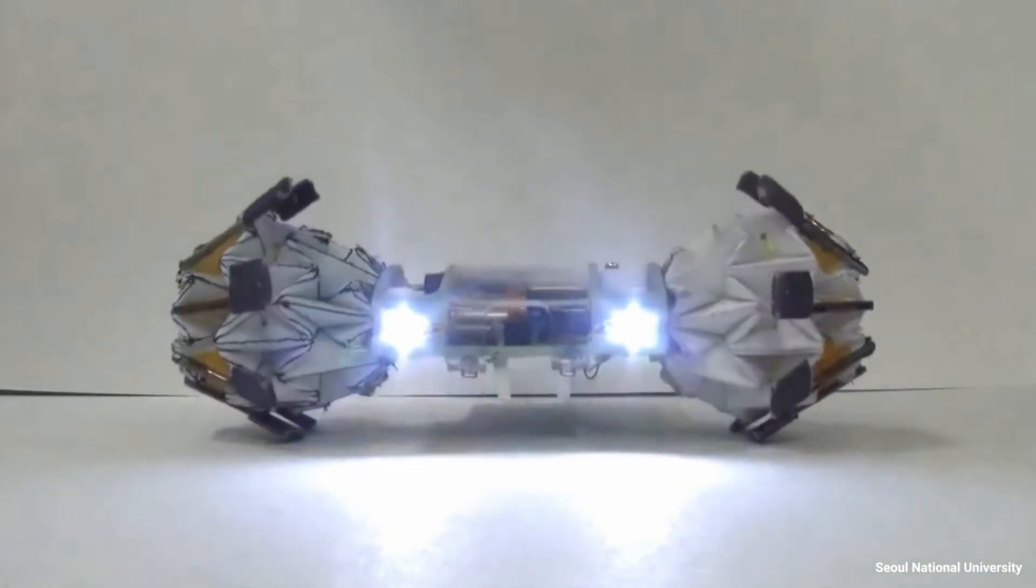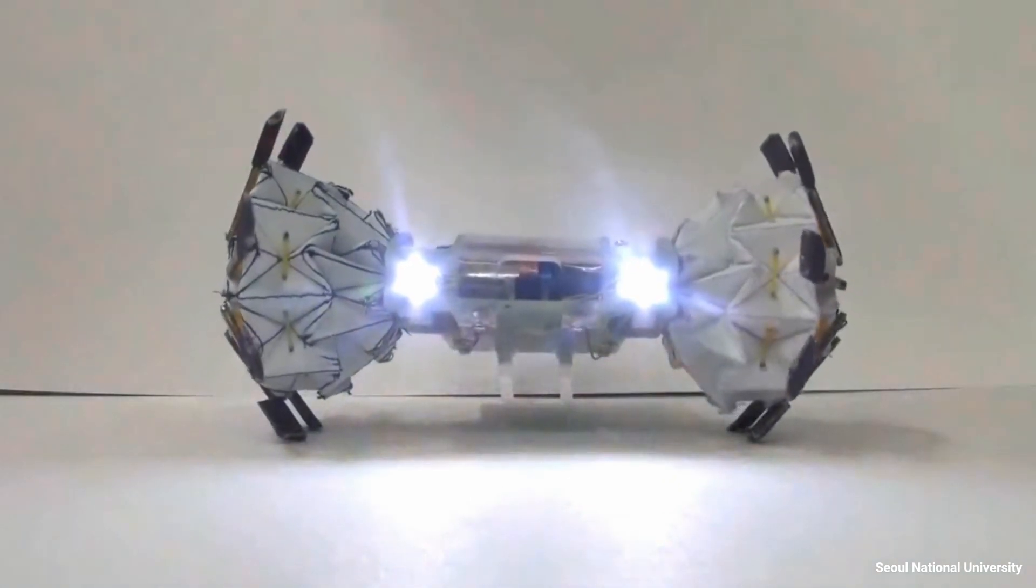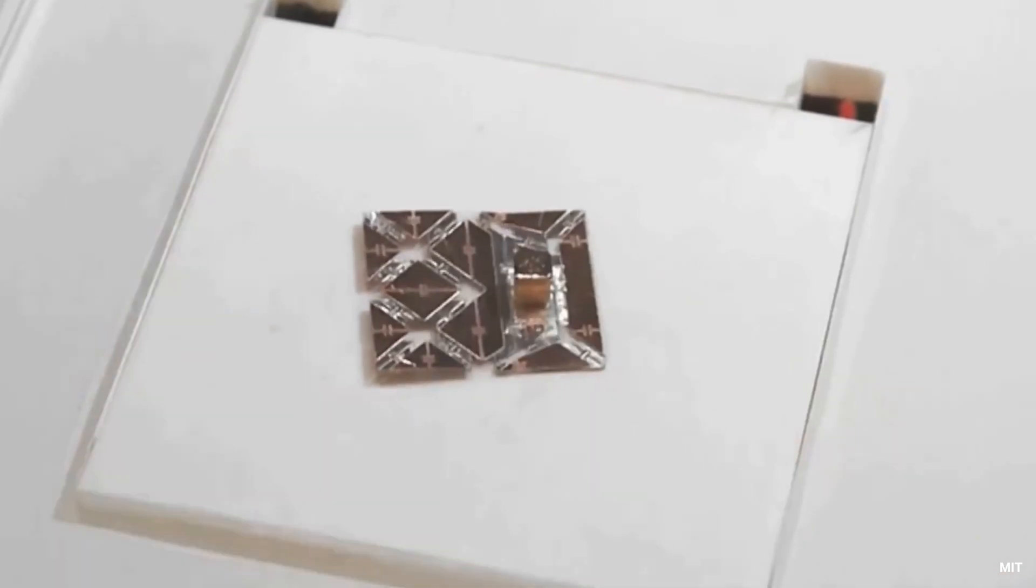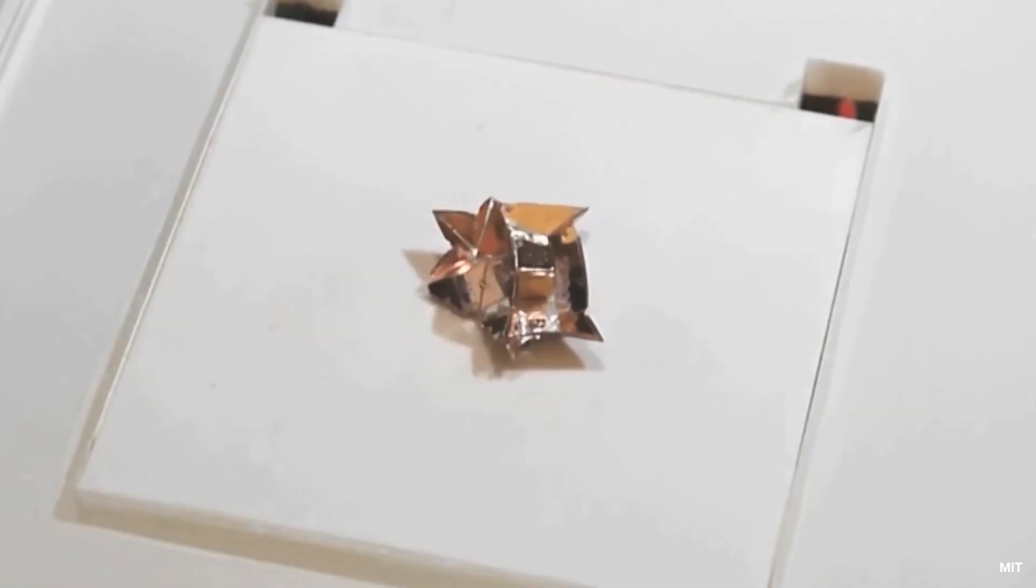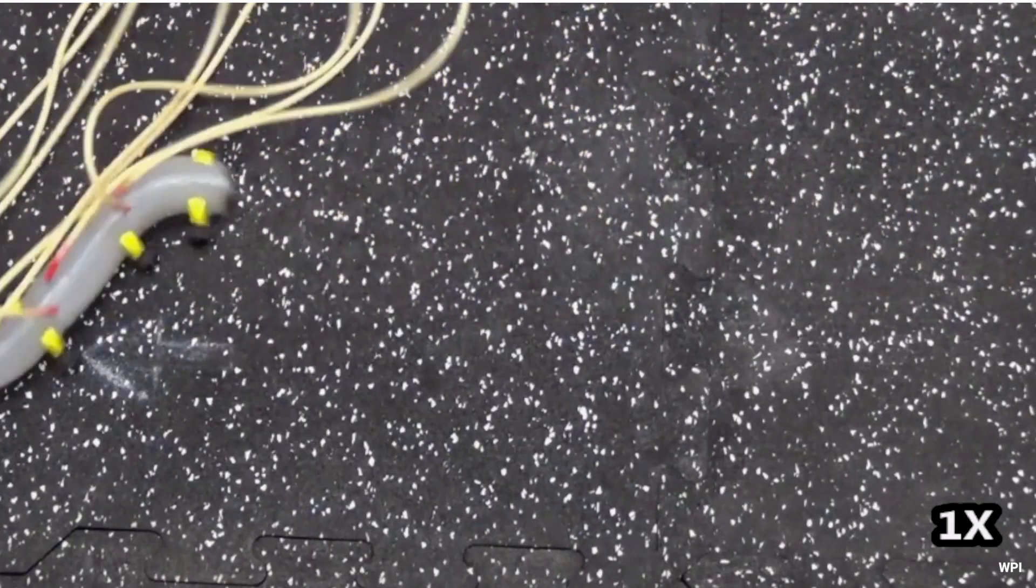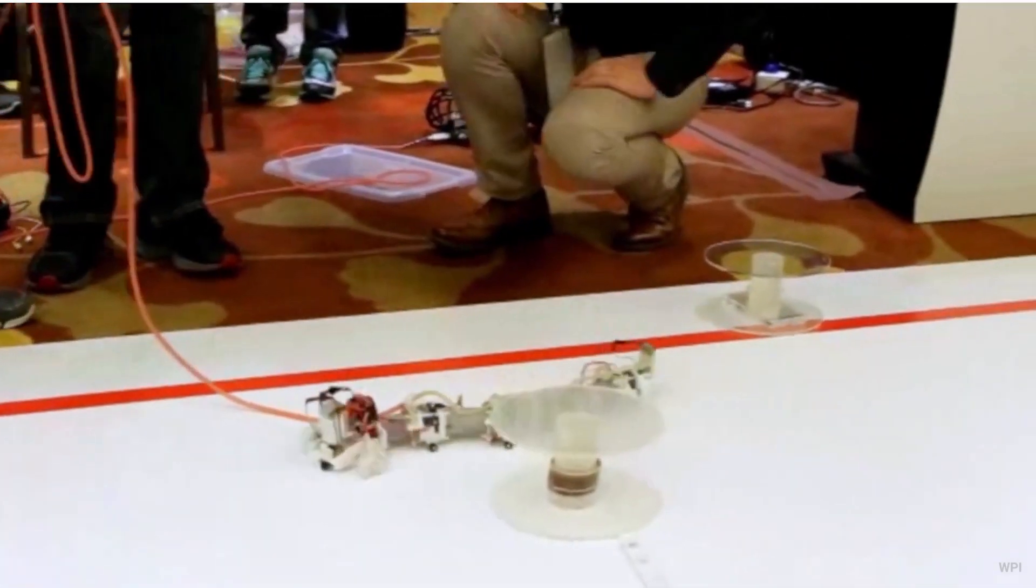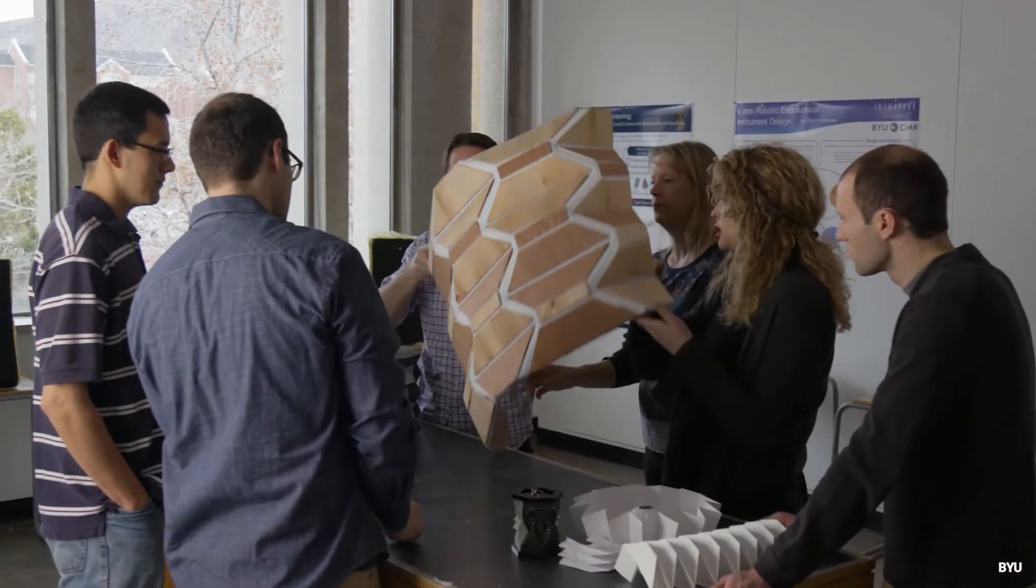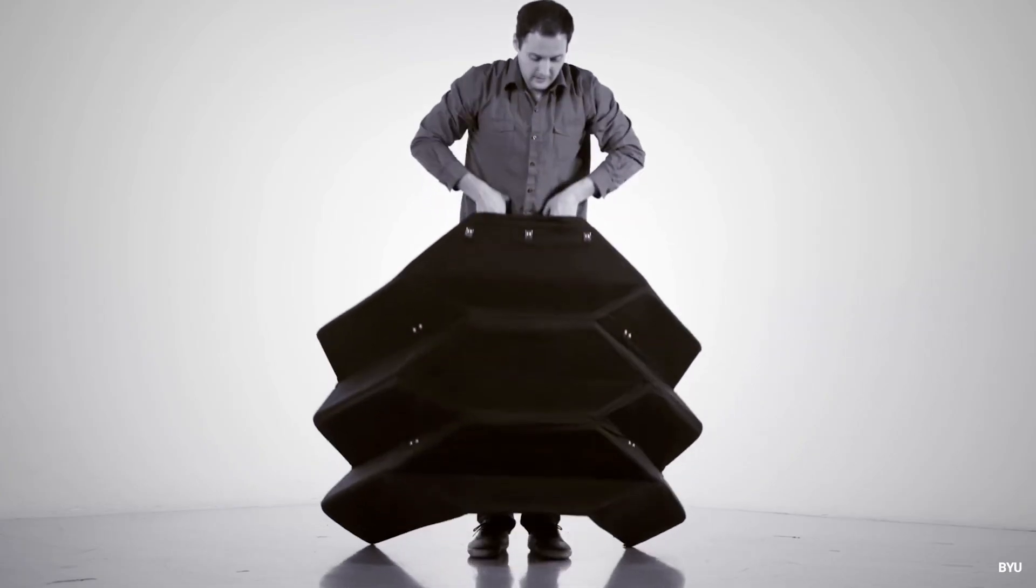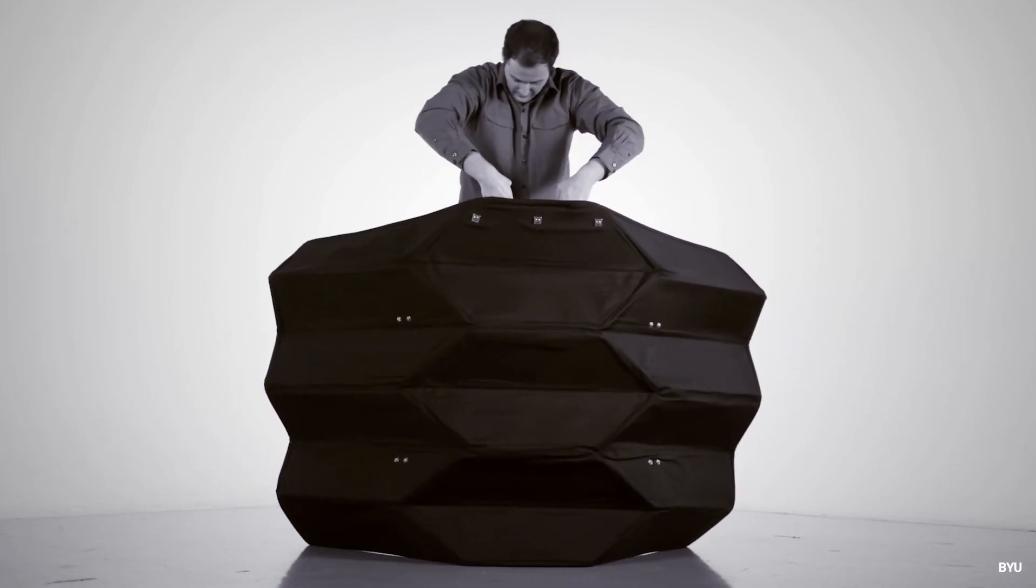In robotics, origami inspired mechanisms allow for the creation of robots that can fold, unfold, and adapt to complex environments. These robots hold promise for exploration, search and rescue missions, and even minimally invasive surgeries where they can navigate tight spaces and unfold to perform intricate tasks. Origami inspired innovations are even being used in law enforcement with the development of equipment such as foldable bulletproof shields.